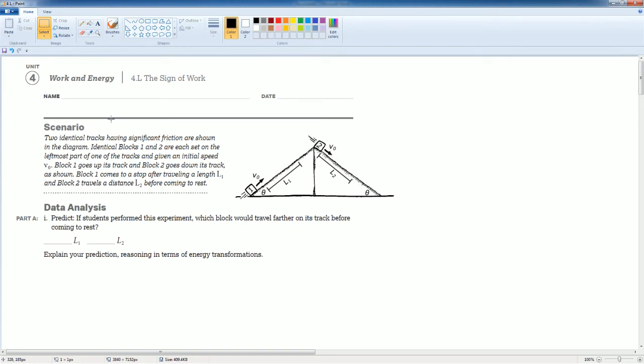Welcome, this is the AP Physics workbook tutorial. Here we're covering Unit 4: Work and Energy, section 4.L, the sign of work. Here's the scenario: two identical tracks with familiar frictions are shown in the diagram. Identical blocks 1 and 2 are each set on the leftmost part of the track and given an initial speed V_naught. Block 1 goes up the track and block 2 goes down the track as shown. Block 1 comes to a stop after traveling a length of L1, and block 2 travels a distance of L2 before coming to rest.